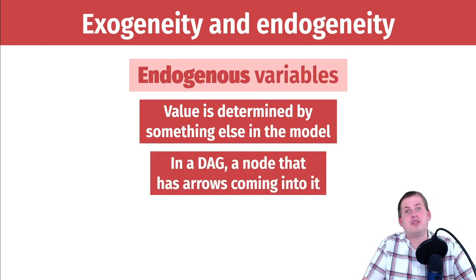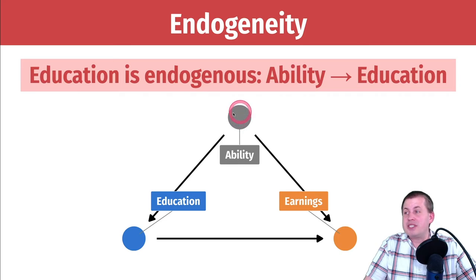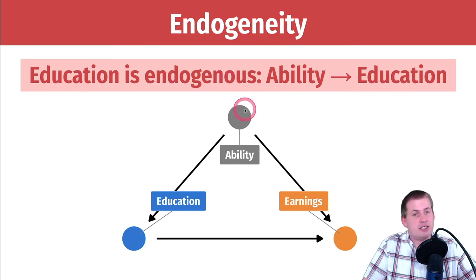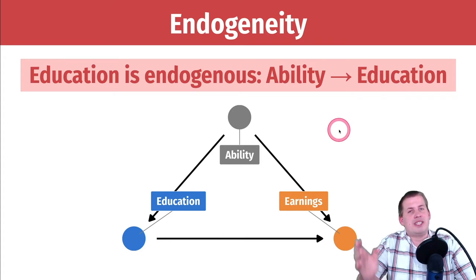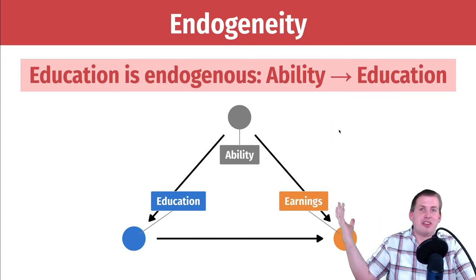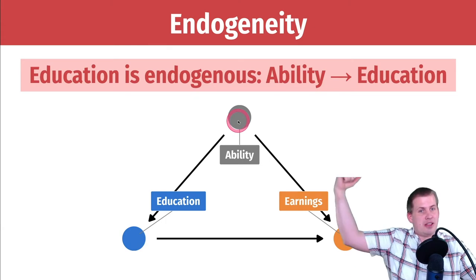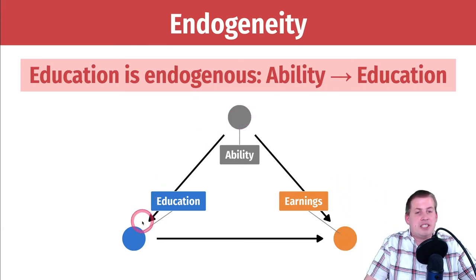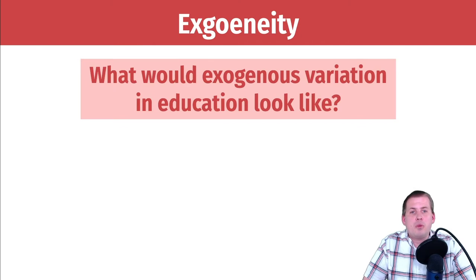Looking at this DAG: education causes earnings, but ability causes both education and earnings. We can say education is endogenous because it has an arrow coming into it — the ability arrow is coming into education, so it doesn't stand alone. Ability here is exogenous because nothing is coming into it. So what would exogenous variation in education look like? What would it look like if education was truly exogenous and nothing else influenced it?